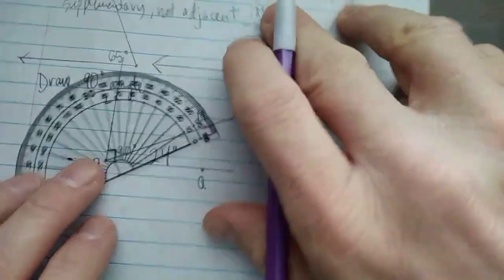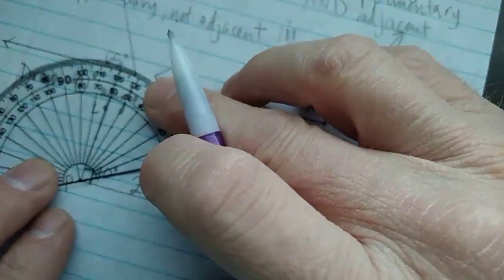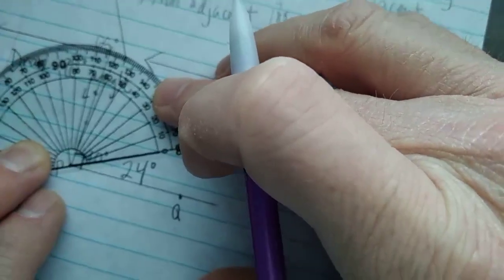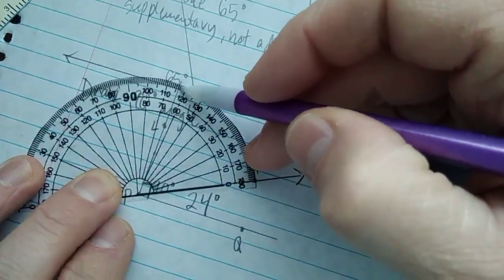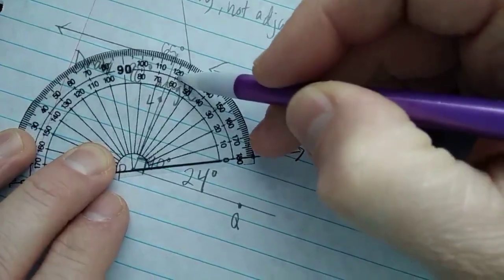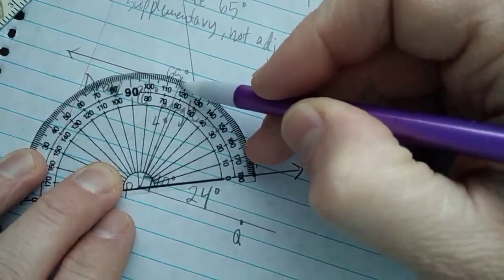Now, I kind of have to turn it to do my second angle. And it looks to be 10, 20, 30, 40, 50, 60, 4 degrees.